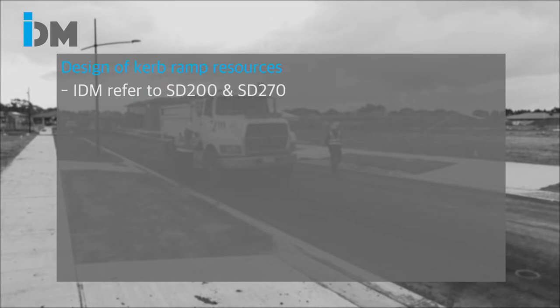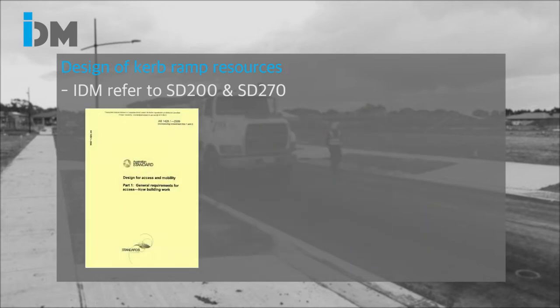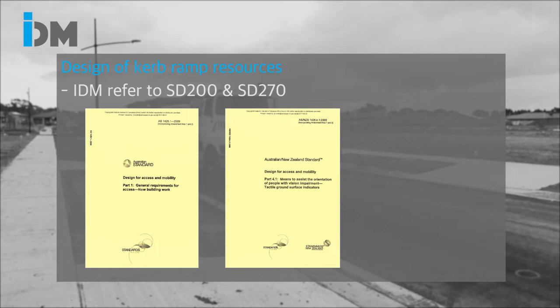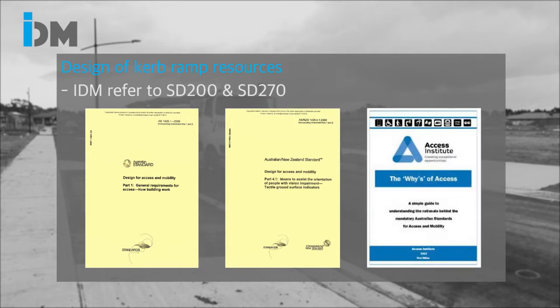There are a number of tools we can use in designing curb ramps. For good rudimentary information, the IDM Standard Drawing 200 and Standard Drawing 270 provide good base information. For more detailed information you can move to Australian Standards 1428 Part 1 for general information and 1428 Part 4 for masses of technical detail on TGSIs. Access Audits Australia have publications that cover off on wider issues around access to the built environment and also have very good question and answer sheet type information.